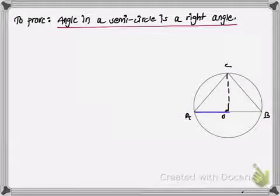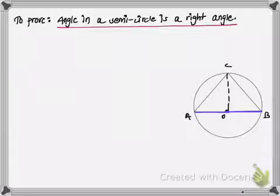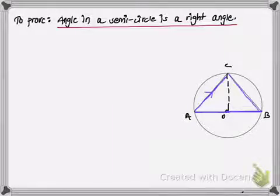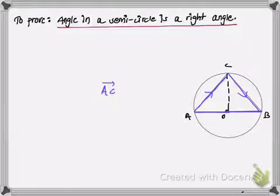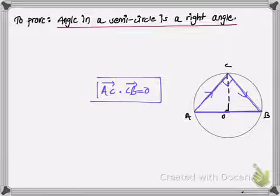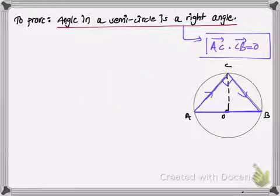We also know that OA and OB are the radii of the circle and their lengths should be equal. To prove this, I have to show that the dot product of vector AC and vector CB is equal to zero — then we can say that the angle between these two vectors must be 90 degrees, and finally conclude that the angle in a semicircle is a right angle.